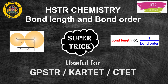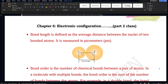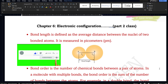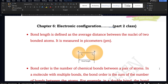This class is based on electronic configuration based on HSTR chemistry syllabus. This is a free class which I have picked from the paid class schedule. In Part 1, I discussed everything in detail about the chapter on electronic configuration. Now in this Part 2 class, I will be discussing a very important trick to solve multiple choice questions based on bond length and bond order. Stay tuned till the end because if you are an HSTR, TET, or GPSTR aspirant, you must watch this class completely.